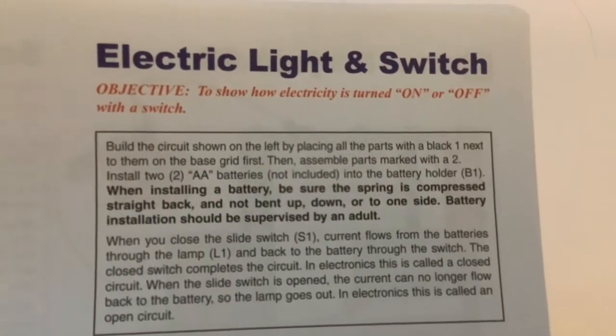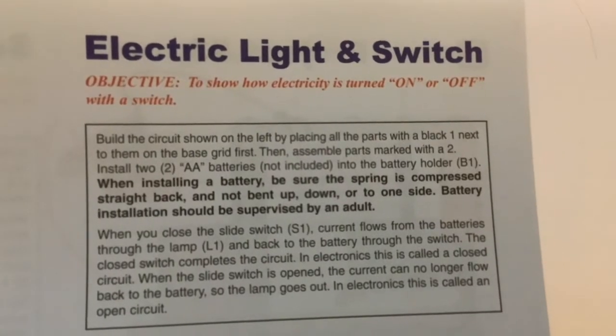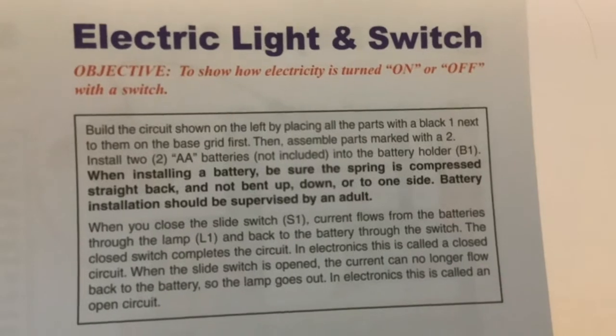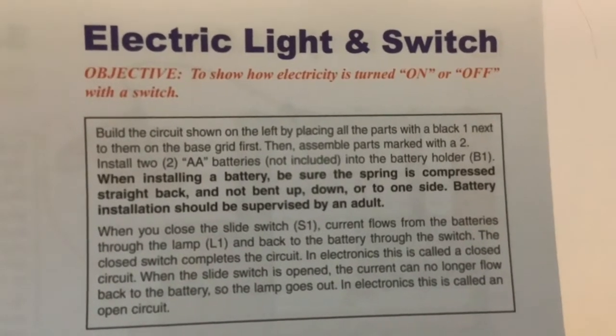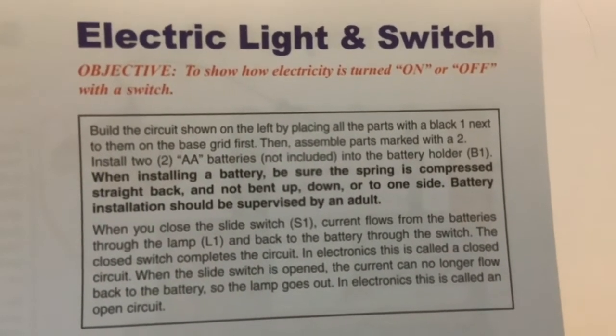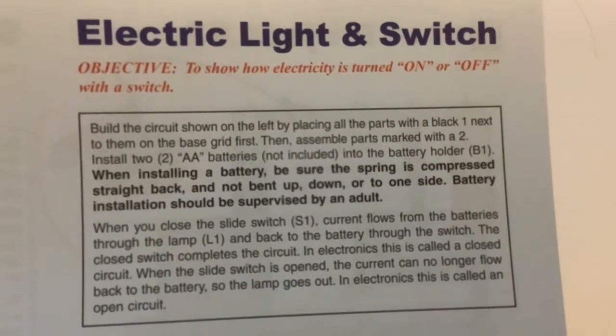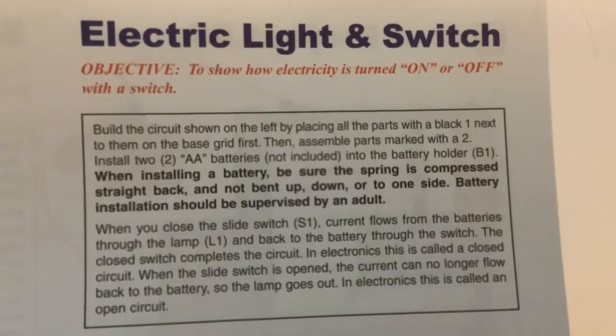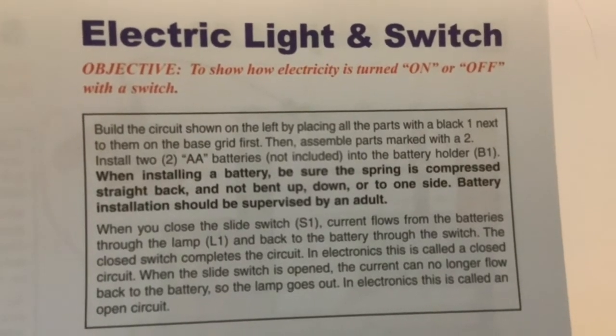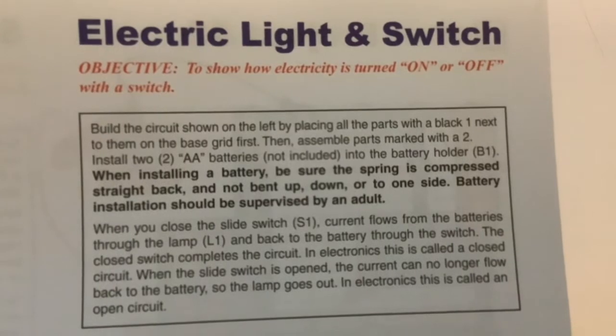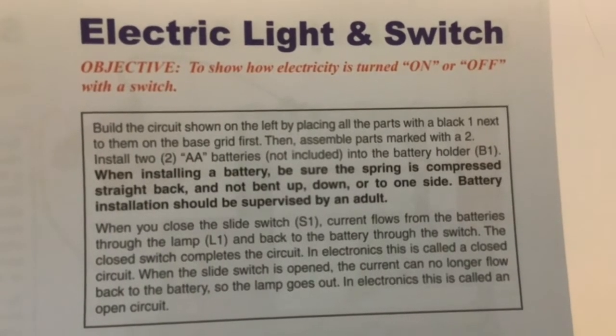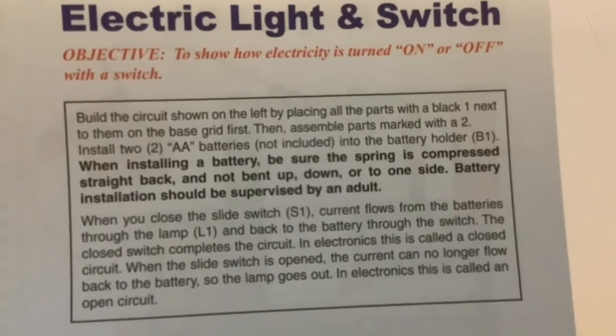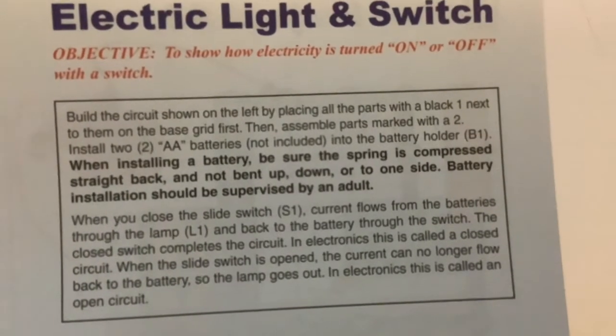This is what it says in the manual: Electric Light and Switch. Objective: to show how electricity is turned on or off with a switch. Build the circuit shown on the left by placing all the parts with a black 1 next to them on the base grid first, then assemble parts marked with a 2 and install two AA batteries into the battery holder.